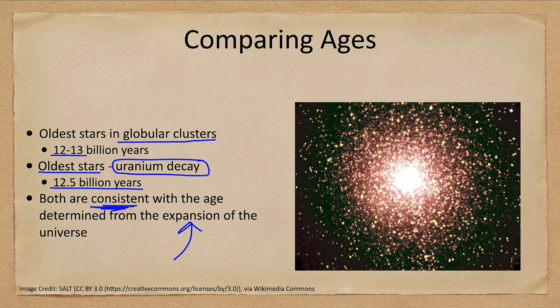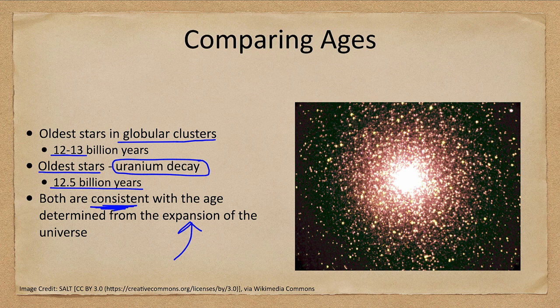It's not like we are finding things that are older. That would be a great concern if we started finding globular clusters that were 15 or 20 billion years old, then something would be very wrong with our models.